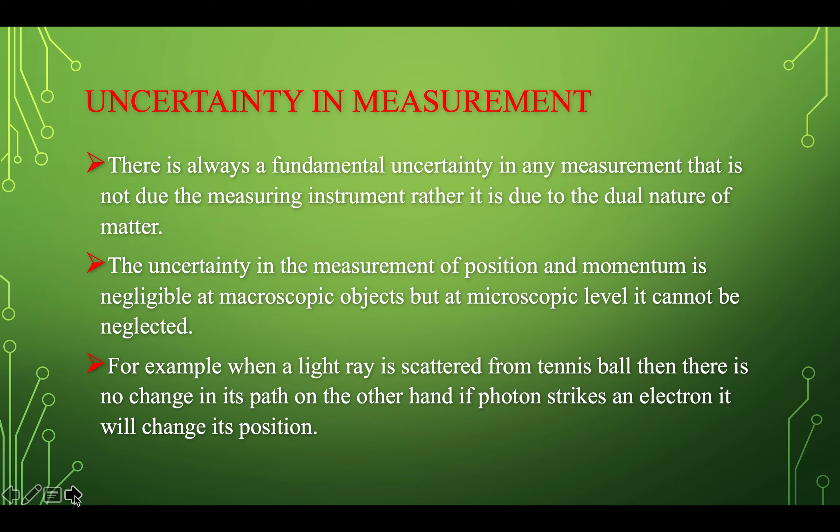For example, when a light ray is scattered from a tennis ball, there is no change in its path. As the tennis ball is a macroscopic particle, if light strikes on it, the tennis ball is heavier compared to the incident light ray and the light will not change the path of the tennis ball.